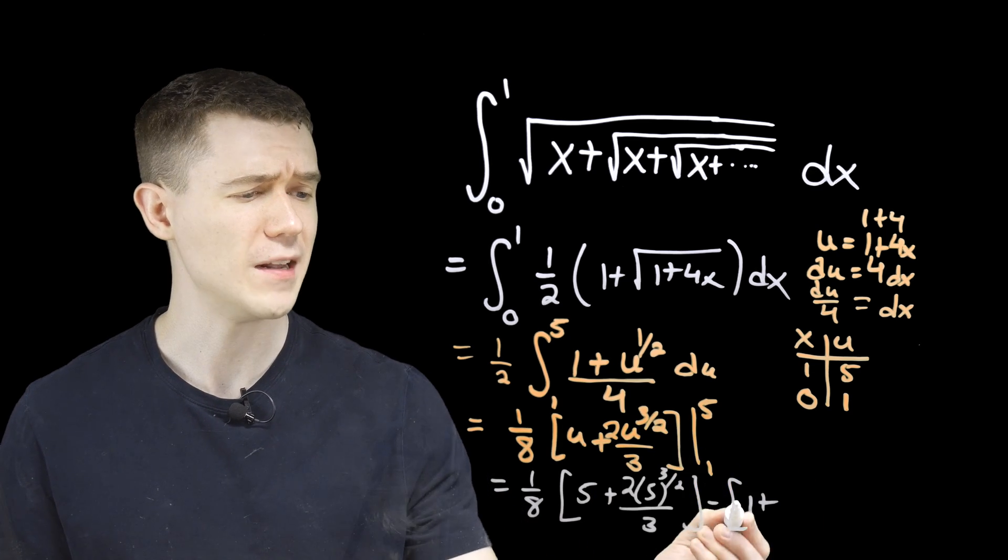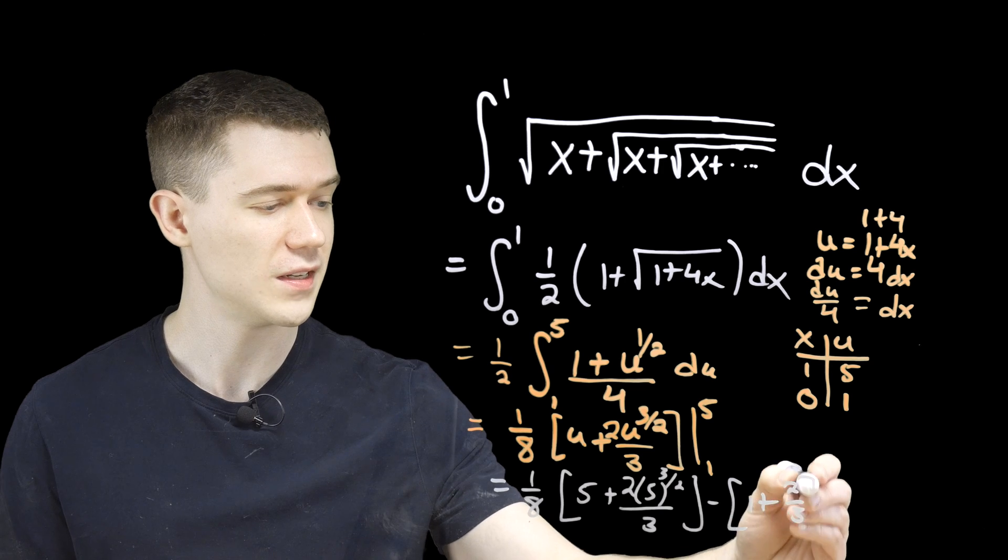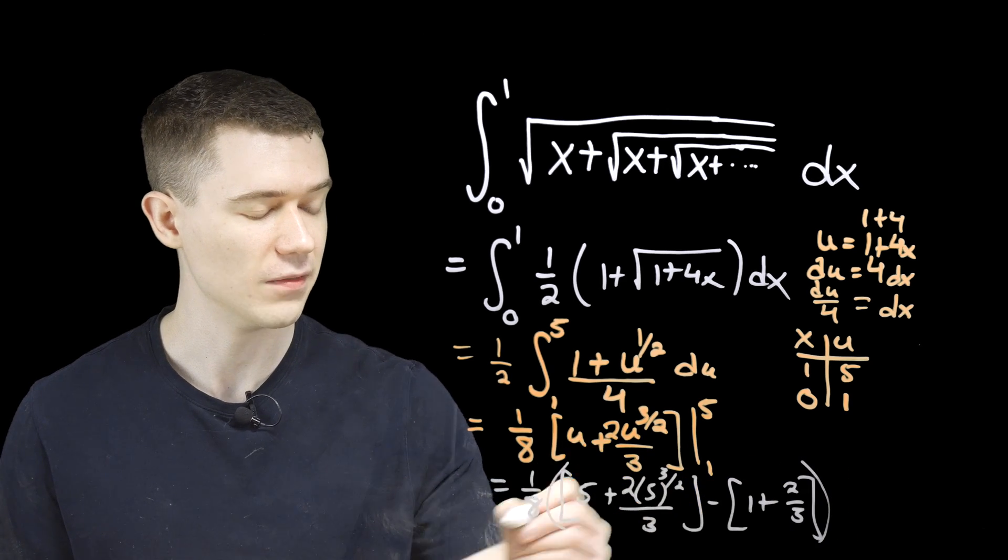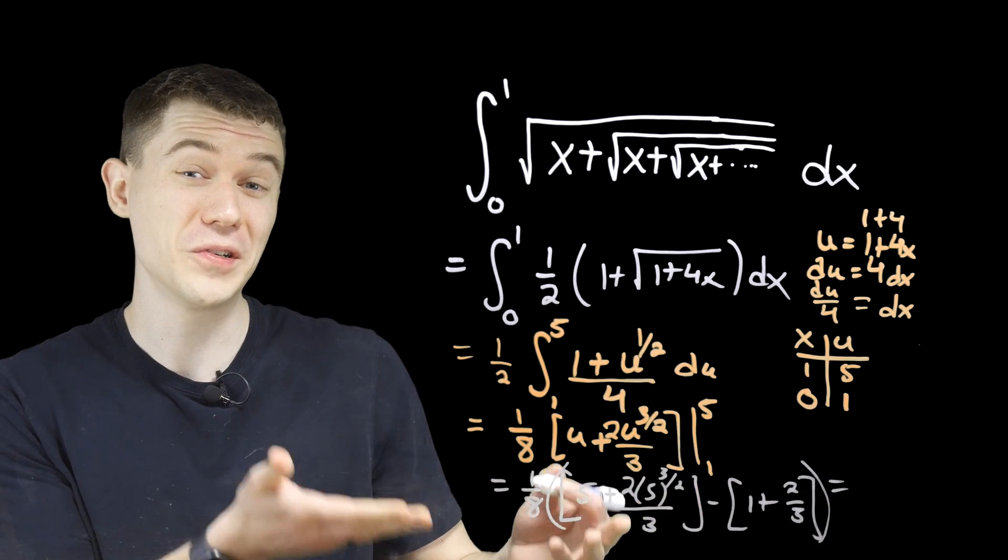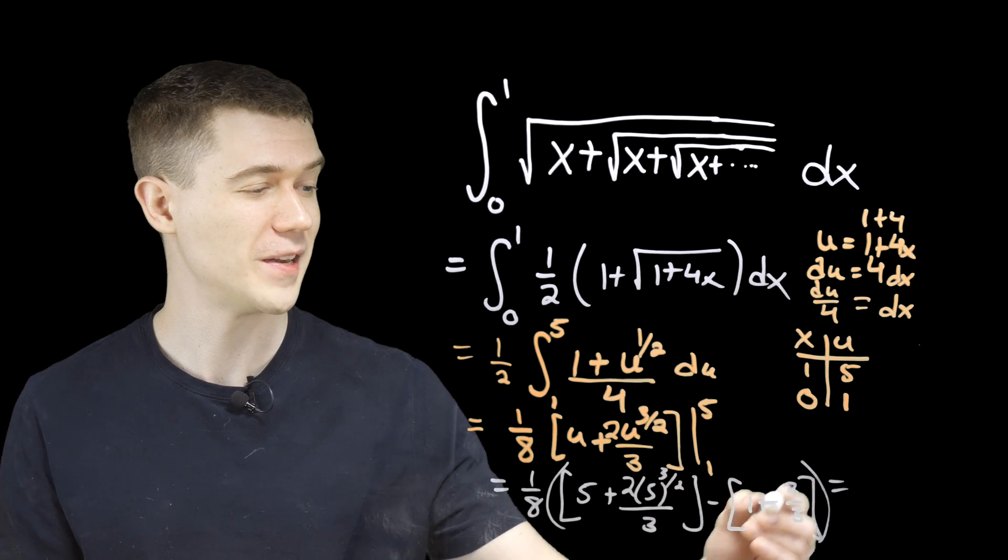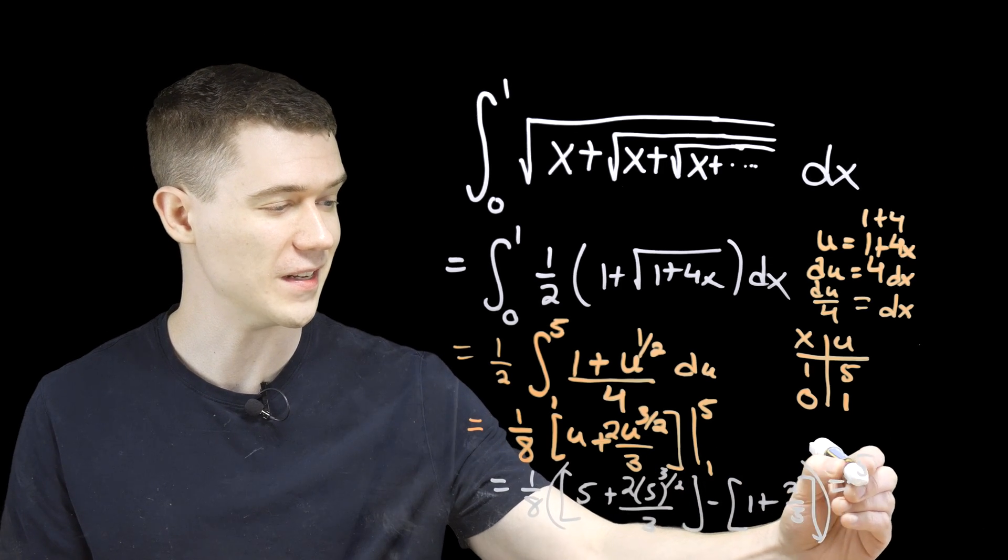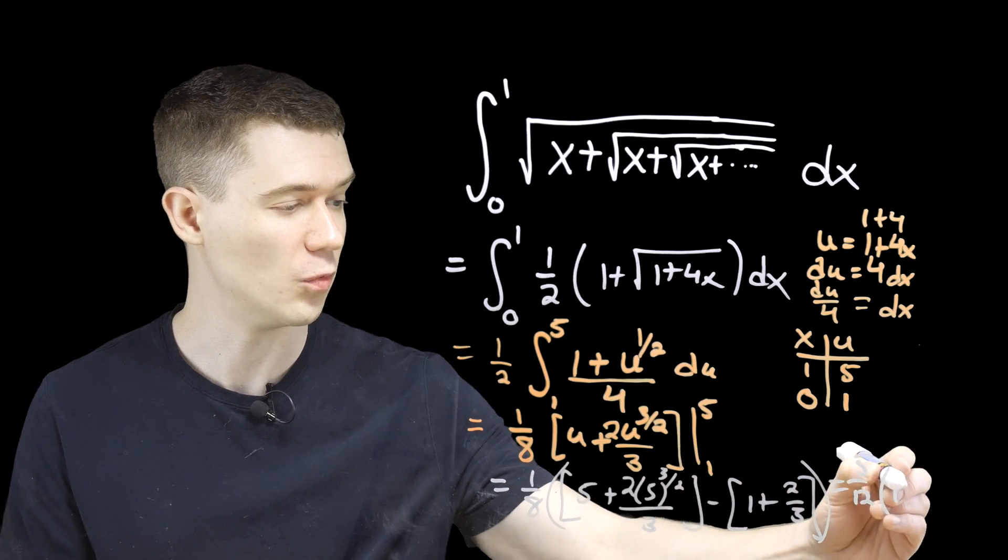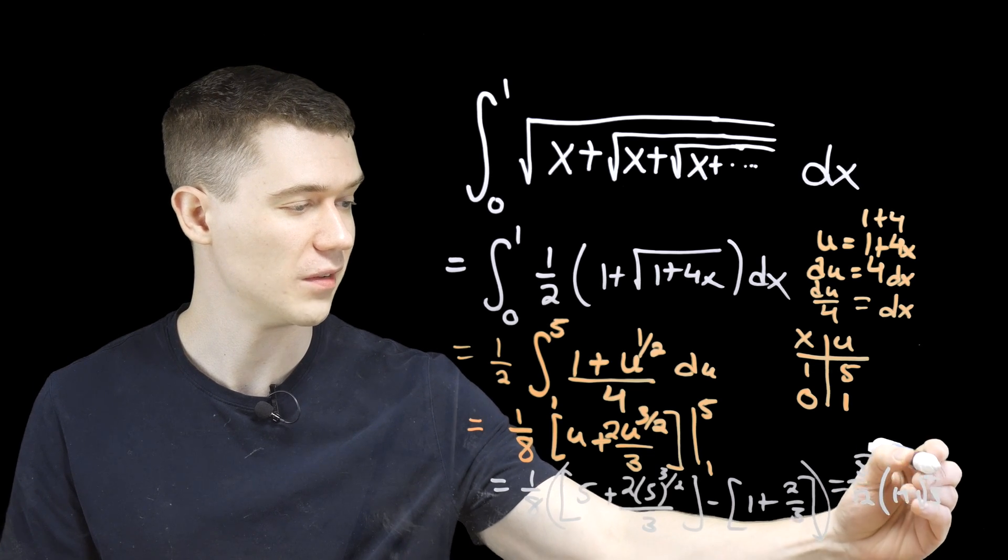Well, one to any power is still one. So plus two thirds here. I need a big parentheses for one eighth. Now you're welcome to crunch this number if you want. I'm a little bit out of space. I'll just write what this is. Five twelfths times one plus root five.